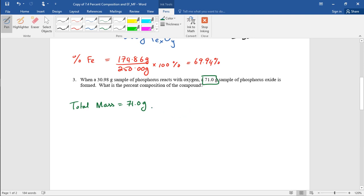So in order to find the percentage of oxygen, first you have to find the percentage of phosphorus. So 71.0 grams is this compound, phosphorus oxide. And phosphorus oxide is some number of phosphorus and some number of oxygen connected to each other. So the percent of phosphorus is 30.98 grams of phosphorus over 71.0 grams times 100. So 30.98 divided by 71 equals 43.63% phosphorus.